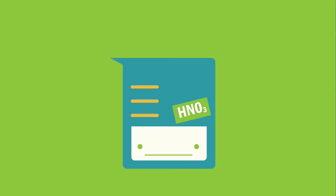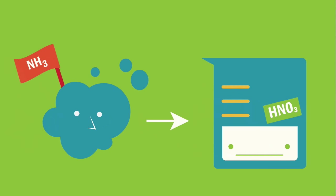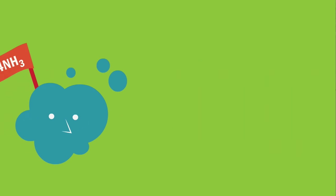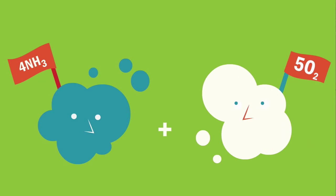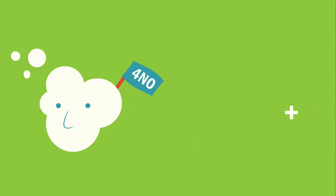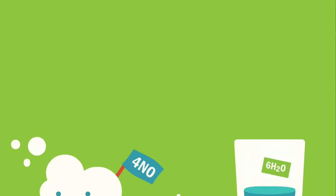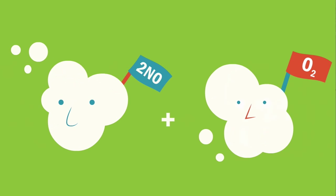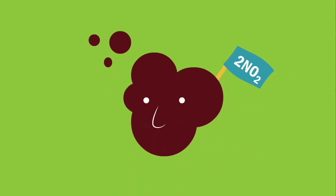Nitric acid is also manufactured from ammonia in a series of steps. First, ammonia combines with oxygen over a platinum catalyst to produce nitrogen monoxide and water. Then, nitrogen monoxide further combines with oxygen to produce nitrogen dioxide, which is a brown gas.